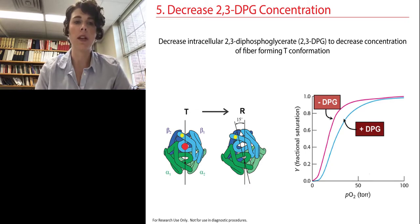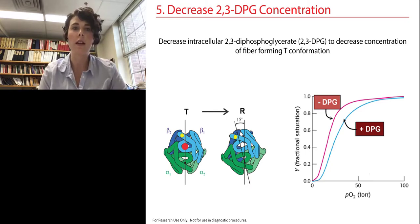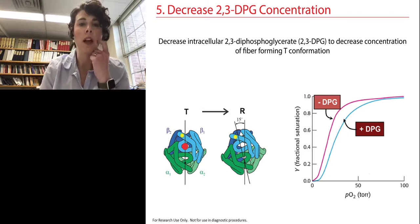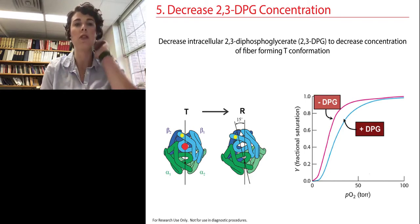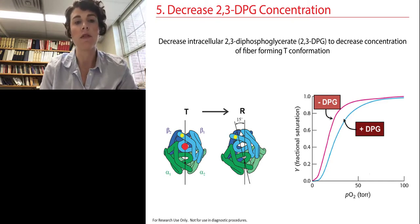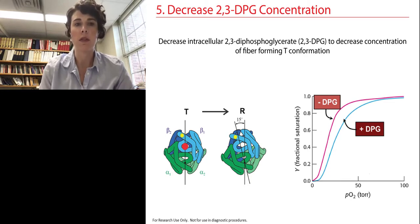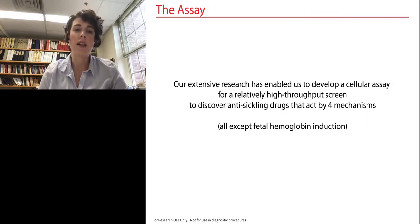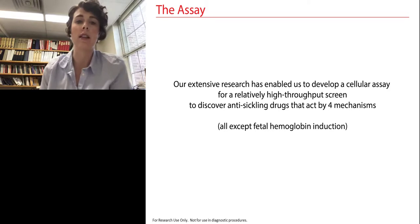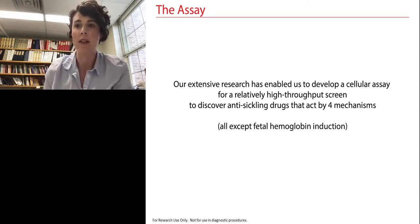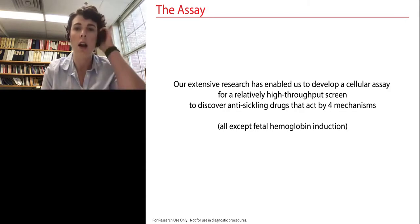The fifth mechanism is to decrease intracellular 2,3-diphosphoglycerate. 2,3-DPG is a small molecule found in blood that binds to the T state of hemoglobin. By decreasing the amount of 2,3-DPG, you decrease the concentration of the T state, shifting the equilibrium to the R state, and the oxygen binding curve would look similar. Our extensive research has enabled us to develop a cellular assay for a relatively high-throughput drug screen to discover anti-sickling drugs that act by four of these five mechanisms — basically all except fetal hemoglobin induction.